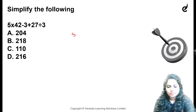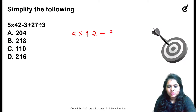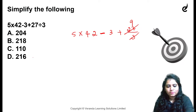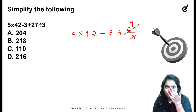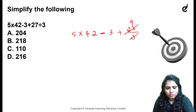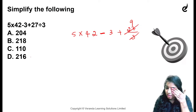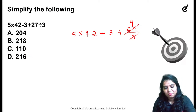This is 5 into 42 minus 3 plus 27 by 3. This is 5 into 43 minus 3 plus 29 by 3. This is 5 into 43 by 3.